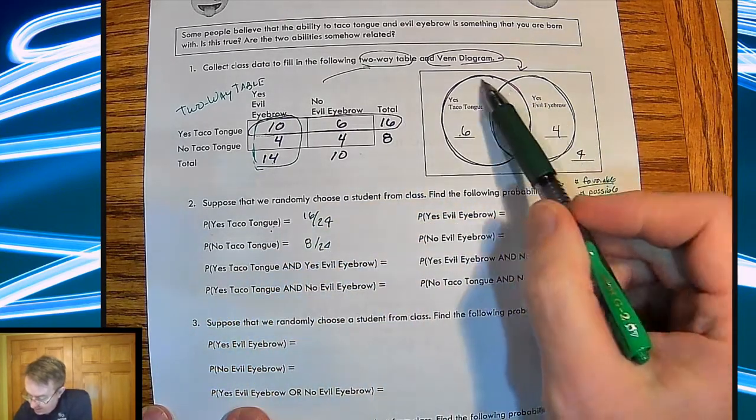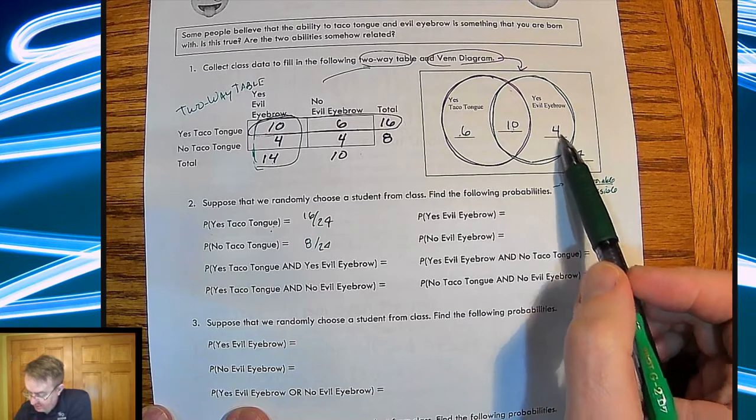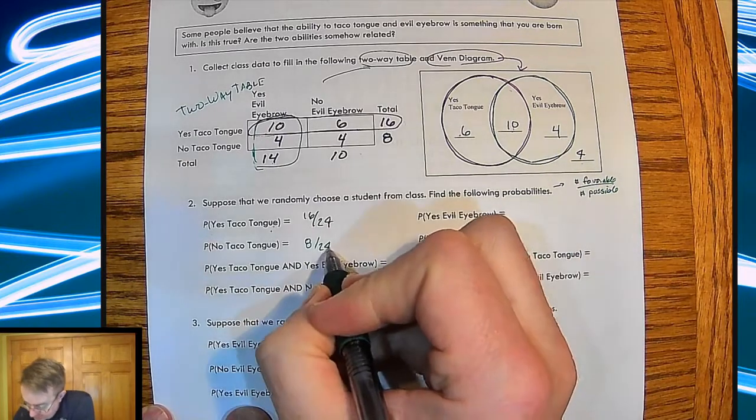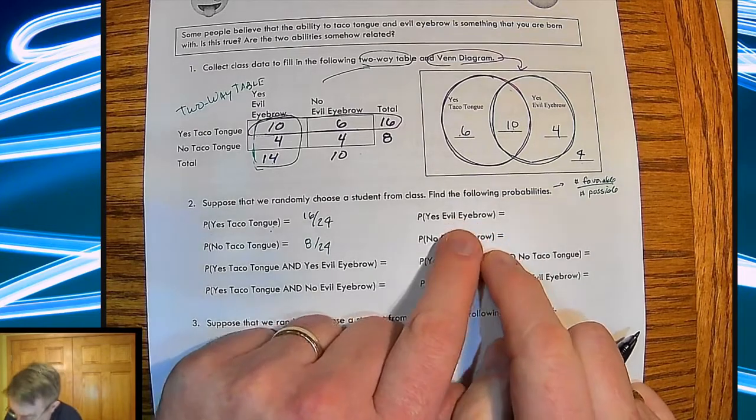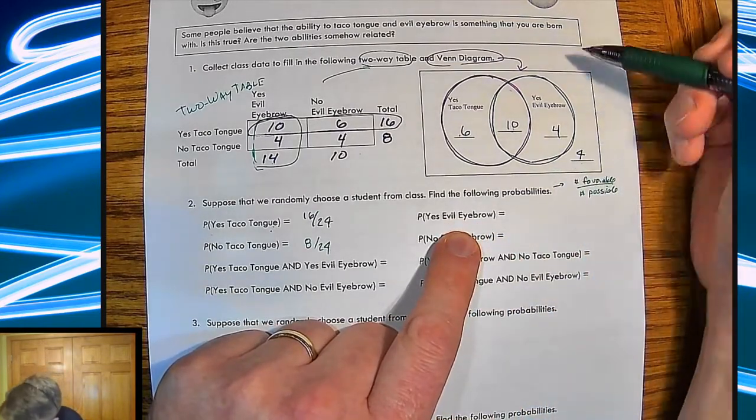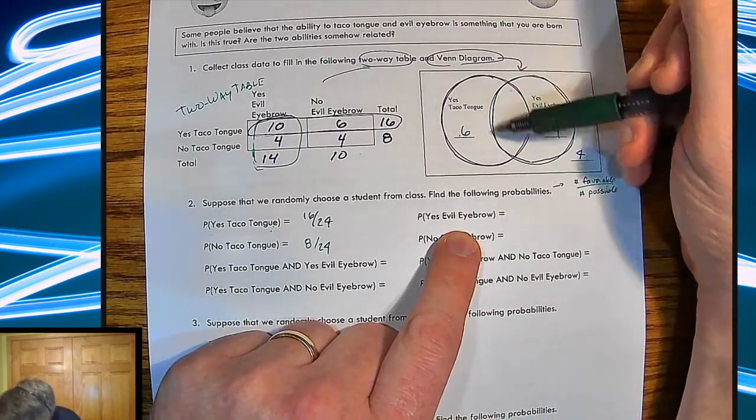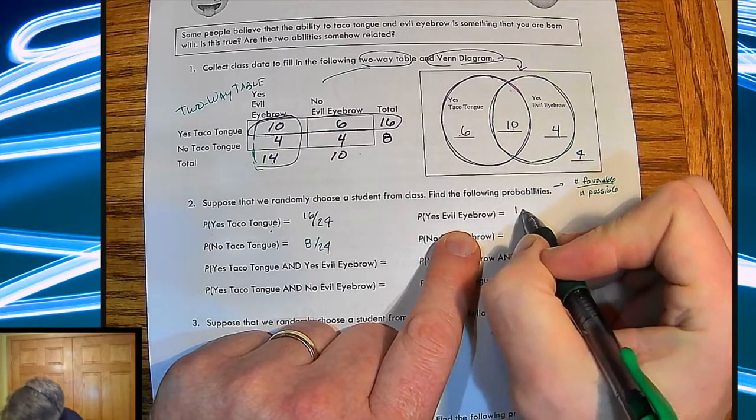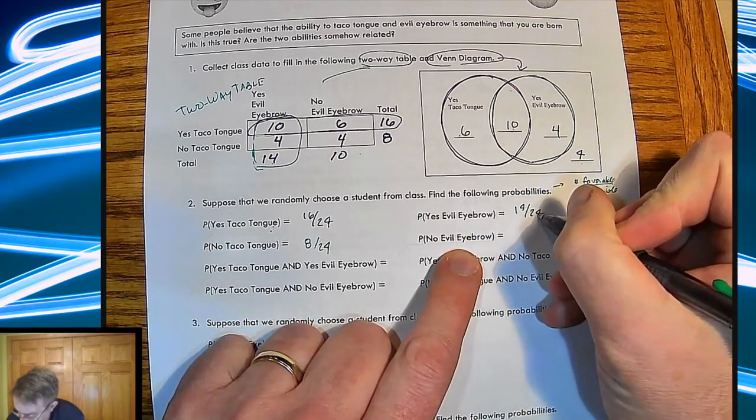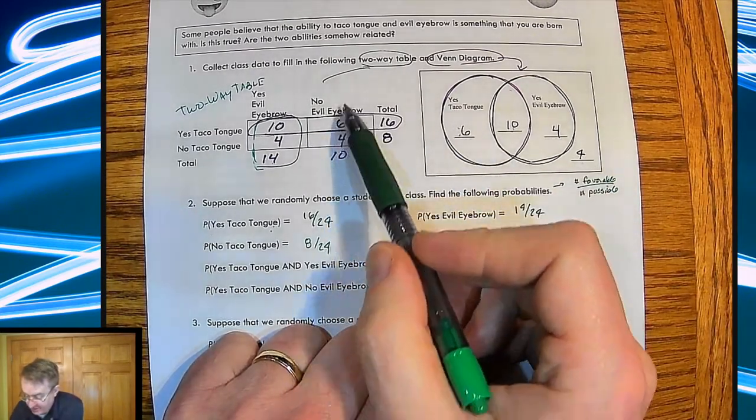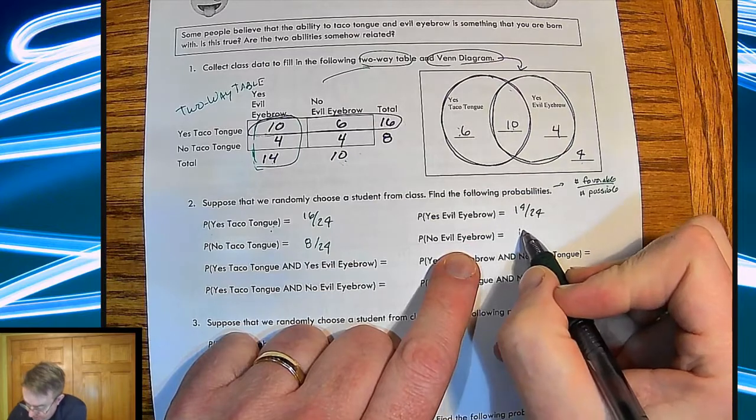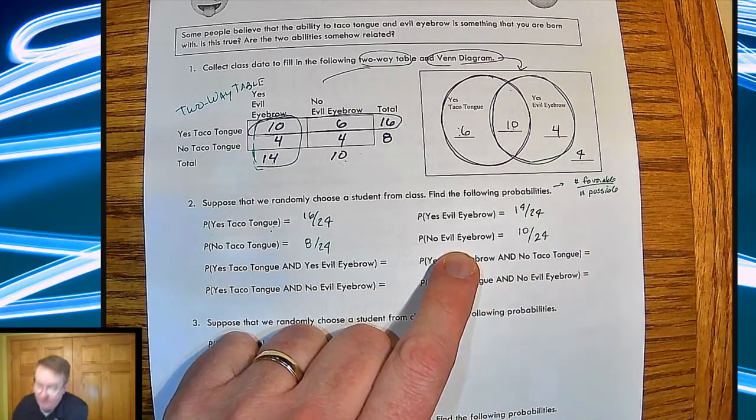Now you could also do it over here. Here's my taco tongue. I've got four combined here. So that's four and four. That's eight. What's the possibility of evil eyebrows? Evil eyebrows here. I've got a total of 14 inside the evil eyebrow circle. So I get that. No evil eyebrows. That's going to be the 10. Or again, you could say no evil eyebrows. My total is 10.